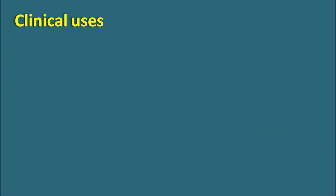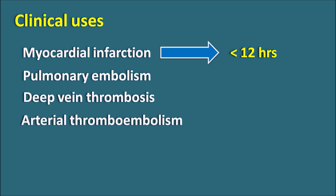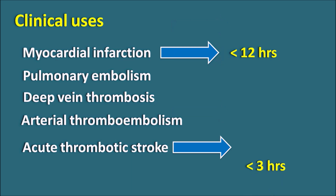What are the clinical uses? These drugs can be given where there is abnormal formation of a clot. One of the important clinical indications is acute myocardial infarction, where fibrinolytics can be given within 12 hours to produce a beneficial action. Similarly, these drugs can be used in pulmonary embolism, deep-vein thrombosis, and arterial thromboembolism. In acute thrombotic stroke, these drugs should be given within 3 hours, because after 3 hours the drugs are ineffective — the clot must be dissolved within this window to restore the circulatory system.